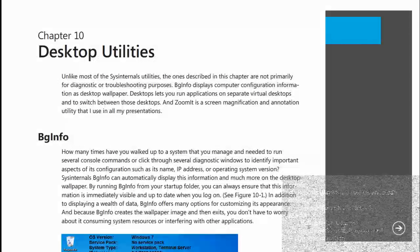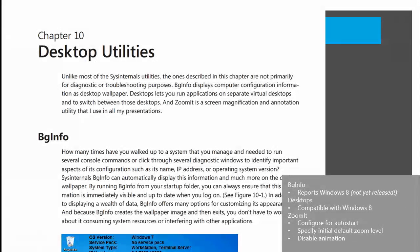BGInfo: if you run that, it hasn't been updated since Windows 8 came out. If you run BGInfo today on Windows 8, it will tell you you're running Windows NT 6.2. There is a new version in the works that will report Windows 8 correctly, but it hasn't been released yet. Desktops is a utility that lets you have multiple virtual desktops and switch between them with different apps. It works great on Windows 7, but with Windows 8's new UI model, it didn't work anymore until they did a bunch of work to get it updated.